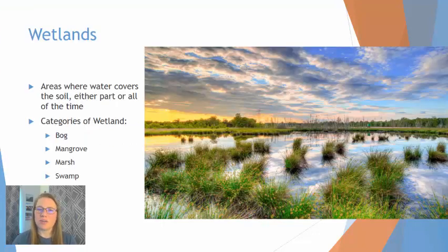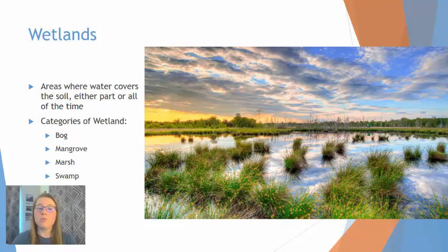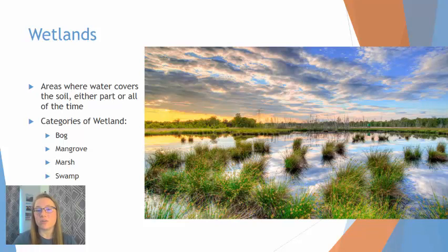Wetlands are areas or ecosystems that have most of the land covered with water for either all of the year or part of the year. Some of the categories that we have discussed in this course, particularly in the earlier units, included bogs, mangroves, marshes, and swamps.